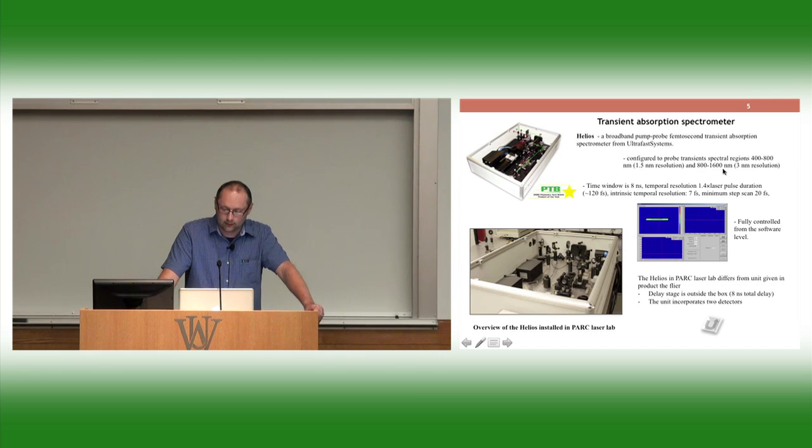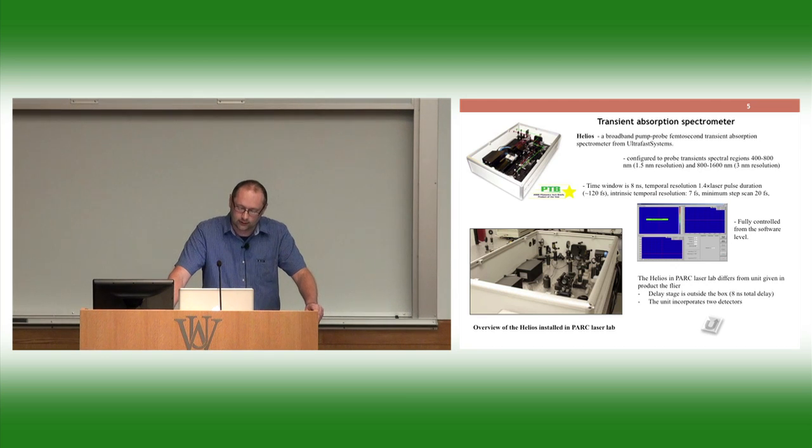It's configured to probe two spectral regions: 400 to 800 nanometers with resolution 1.5 nanometer, and the NIR range from 800 to 1600 nanometers with resolution 2 nanometers. The temporal window, what delay times we can measure between pump and probe: this unit has 8 nanoseconds delay maximum. It's really good actually. I used to work on the previous version that had only 1.6 nanoseconds. The temporal resolution of the instrument is actually defined by the company. They claim it's 1.4 multiplied by the laser duration. In our case it would be around 120-130 femtoseconds.